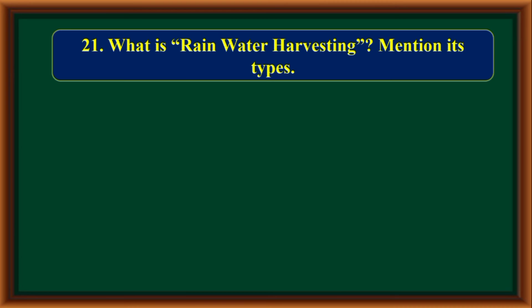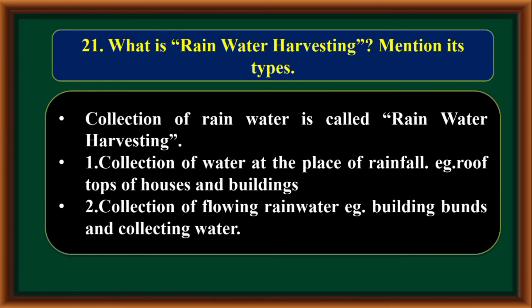What is Rainwater Harvesting? Collection of rainwater is called Rainwater Harvesting. Its types are: collection of water at the place of rainfall, for example roof tops of houses and buildings; and collection of flowing rainwater, for example building bunds and collecting water.